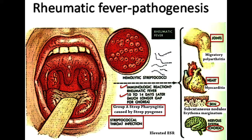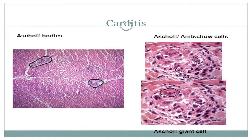Rheumatic fever can lead to rheumatic heart disease. In rheumatic heart disease, distinctive lesions occur in the heart called Aschoff bodies. Aschoff bodies contain enlarged activated macrophages called Anitschkow cells, which are pathognomonic for this disease.